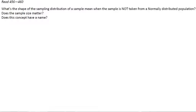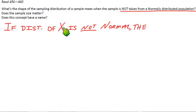The first part of the notes here says, what's the shape of the sampling distribution of a sample mean when the sample is not taken from a normally distributed population? So we know if the parent population is normal, capital X is going to be our parent population. If it's normal, the sampling distribution is normal.